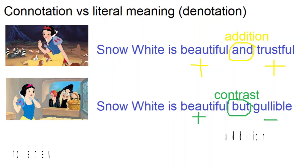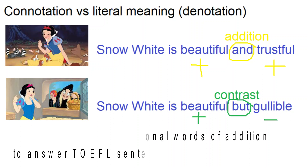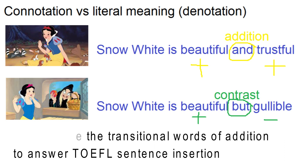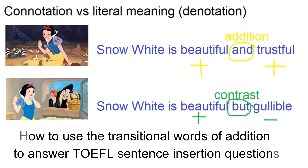In the previous episode, we learned the concept of the connotations of words and how to use connotations to do an addition or a contrast. Understanding the connotation is very helpful when you have to guess the meaning of a word. For example, even if you don't know the meaning of 'gullible,' you can tell that it has a negative meaning if it is used in a sentence.